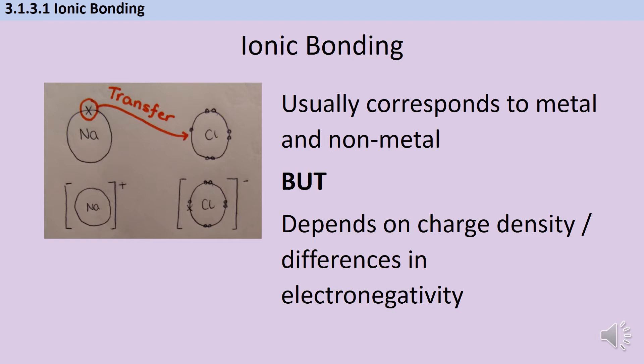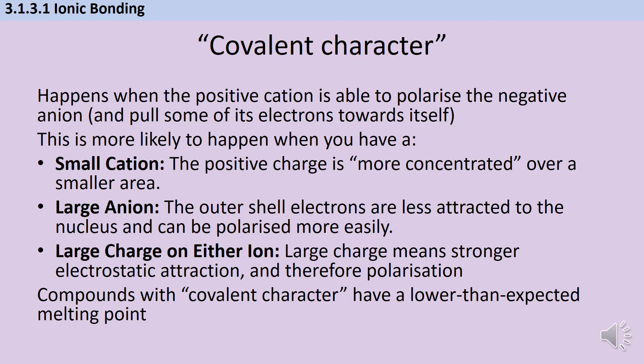The closer you get to the middle of the periodic table, the smaller those differences become, and you might see a substance with ionic bonding but with some covalent character. We have a spectrum of bonding, from ionic bonds where electrons are completely transferred, to covalent bonds where they're completely shared, with slightly polar covalent bonds and ionic bonds with covalent character in between. This happens when the positive cation polarizes the negative anion and pulls some electrons back towards itself.